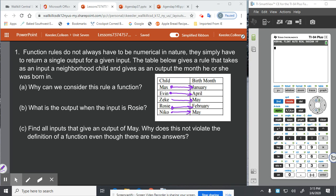So it follows the idea of each input only having one output or each element of the domain only having one element of the range, which makes sense. You cannot be born in more than one month. So we can say, since each person only has one birthday month.